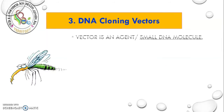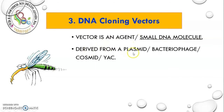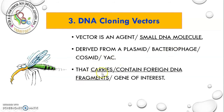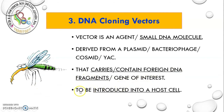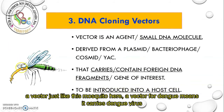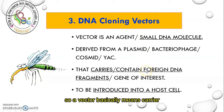The next tool is the DNA cloning vector. It is an agent or a small DNA molecule derived from a plasmid, bacteriophage, cosmid, or YAC. It carries or contains foreign DNA — the fragment or gene of interest — which is to be introduced into a host cell. A vector is just like a mosquito: a mosquito is a vector for dengue because it carries the dengue virus. So a vector basically means carrier.